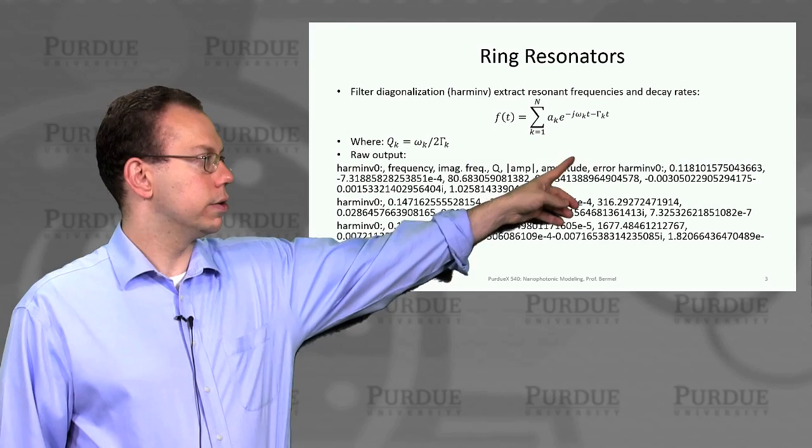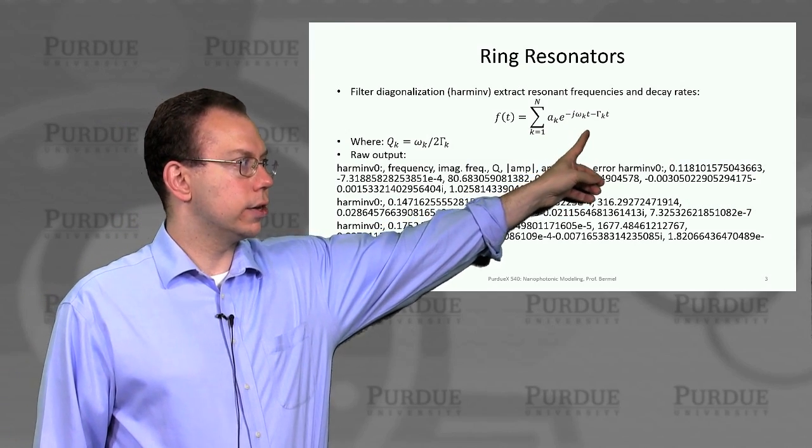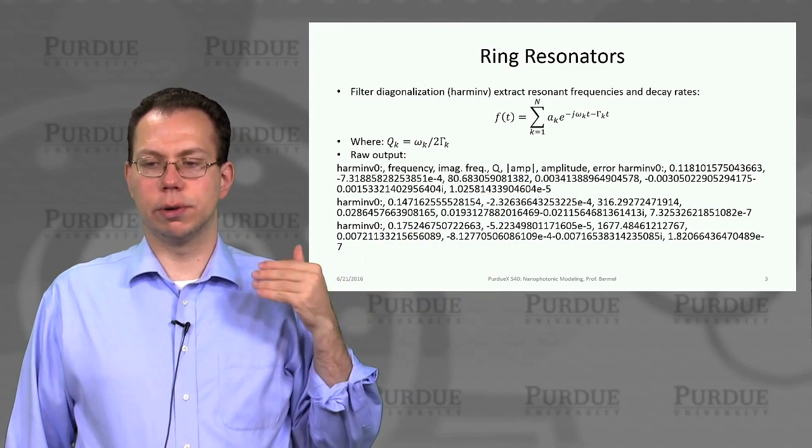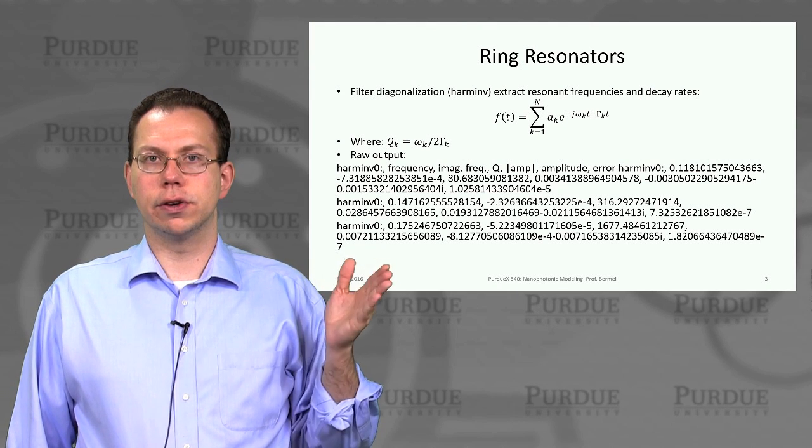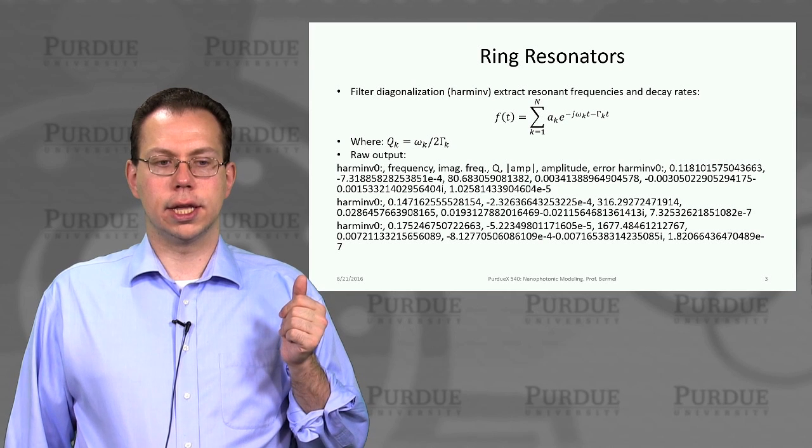The real part of the frequency, omega k, is telling you the normal harmonic oscillation. But then this gamma k is telling you a decay rate.